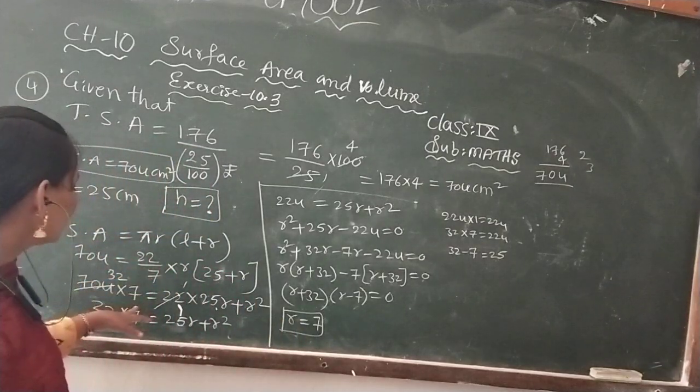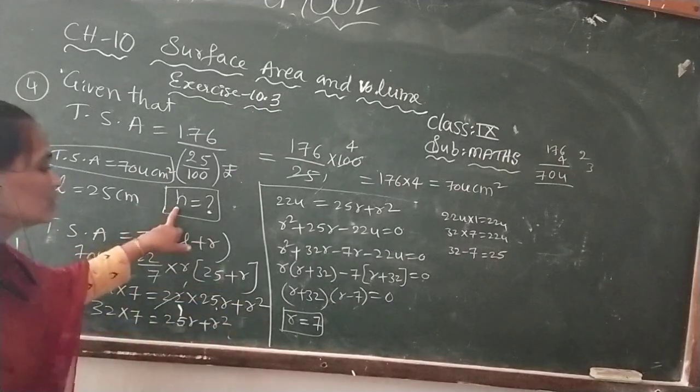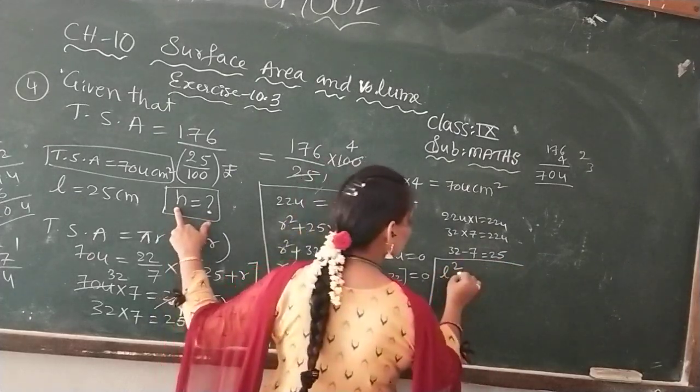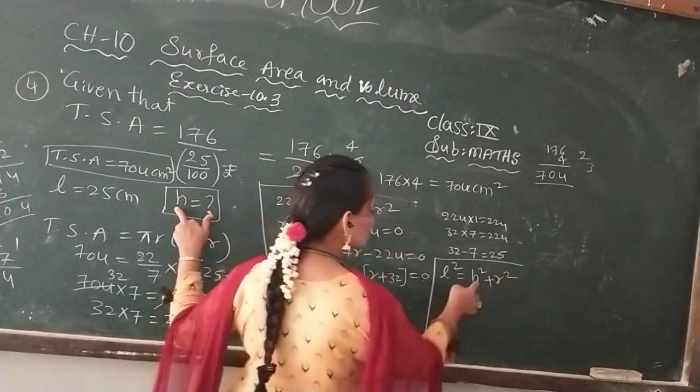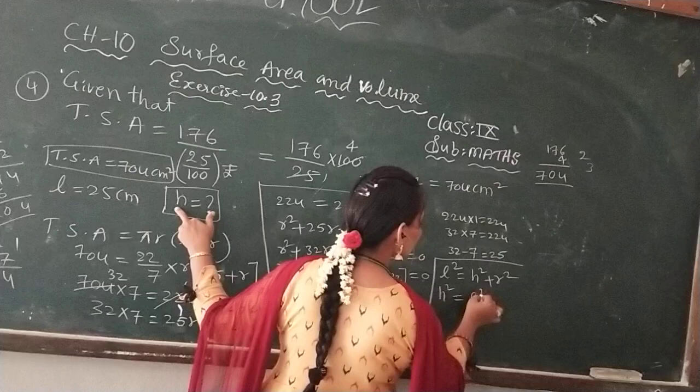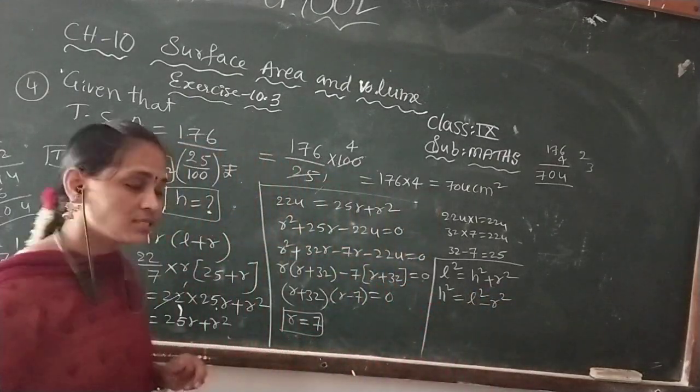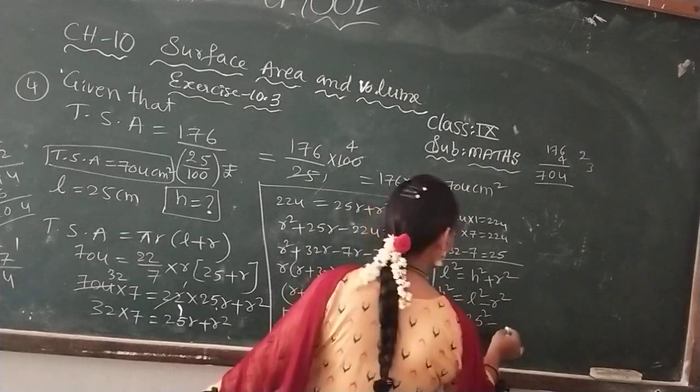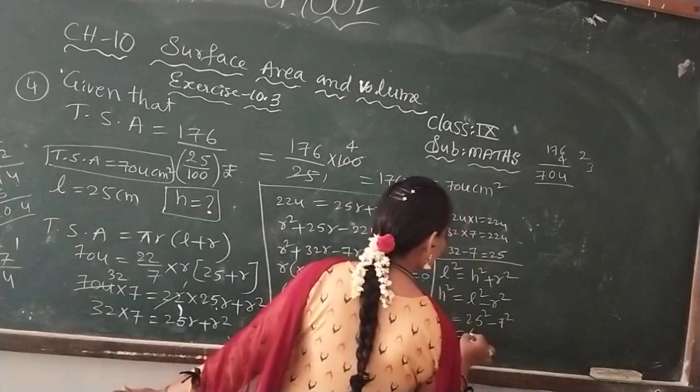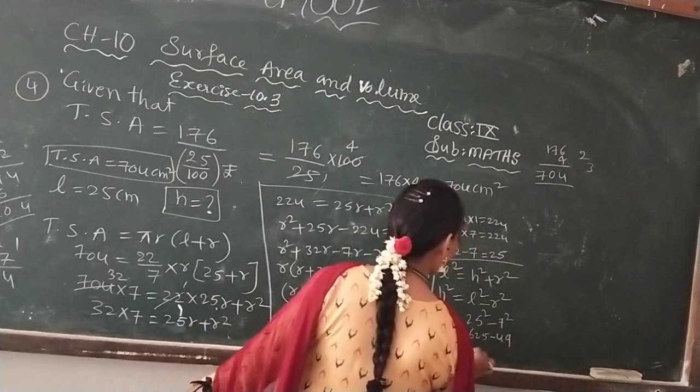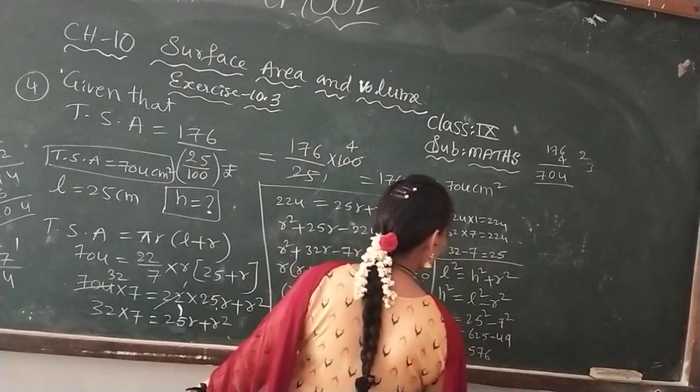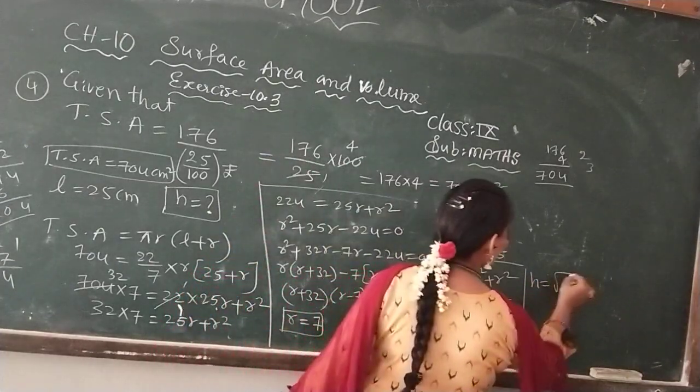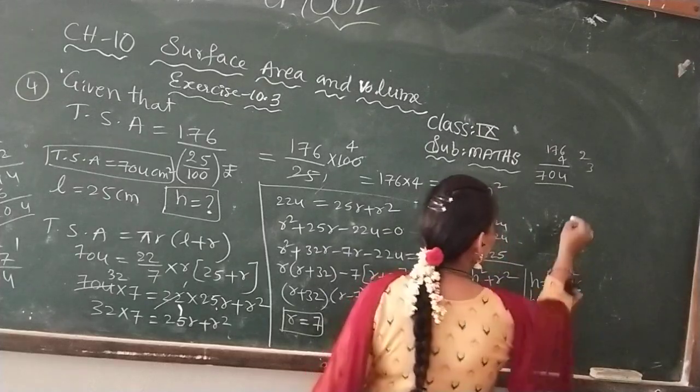Slant height is 25, L value given, R value given. Then from that we can find H value. We know that slant height of a cone, L square equals H square plus R square. From this, H square equals L square minus R square. So H square equals 25 square minus 7 square, which is 625 minus 49, that is 576. H equals square root of 576, which is 24.